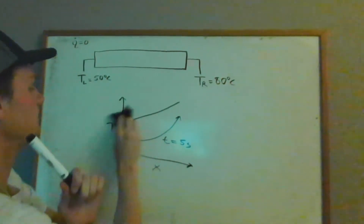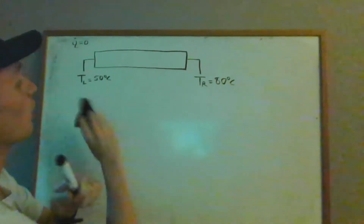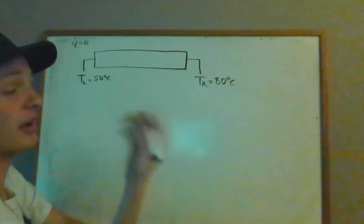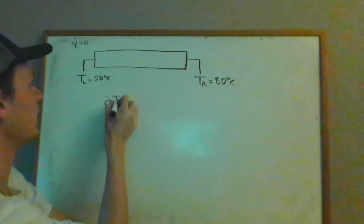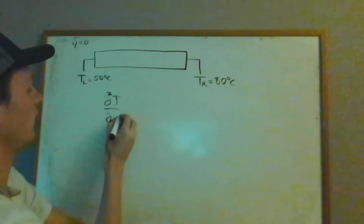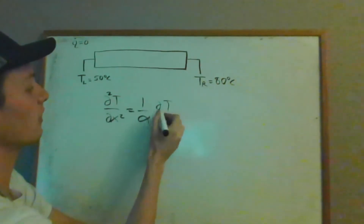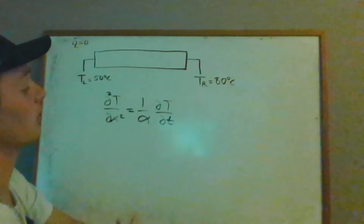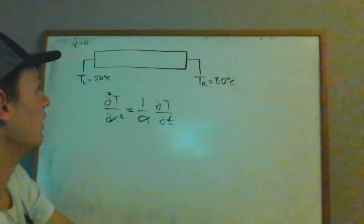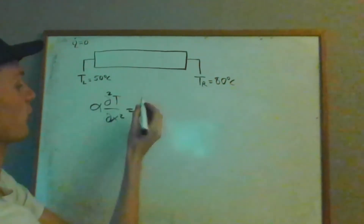What we can do at the outset is write the heat diffusion equation for the x direction, because we just have one dimension here — the length of our bar. I derived the heat diffusion equation in the previous video. So we have the second partial derivative of temperature with respect to position equal to the inverse of the thermal diffusivity multiplied by the first partial derivative of temperature with respect to time. Notice I ignored the heat generation term because we don't have any. We can multiply both sides by alpha to clean that up.